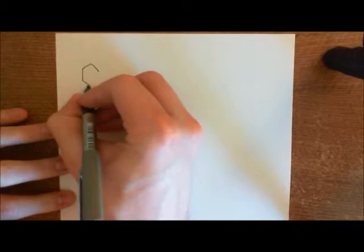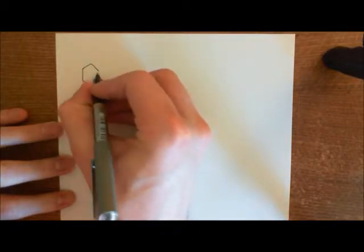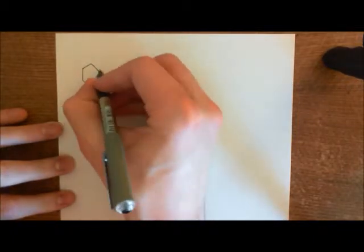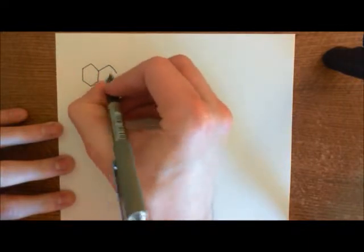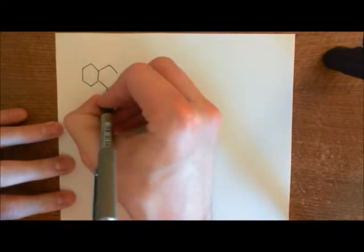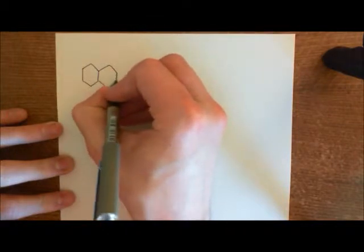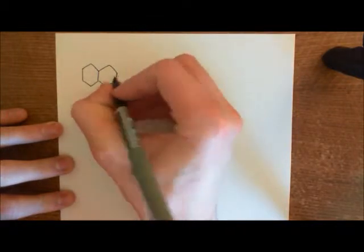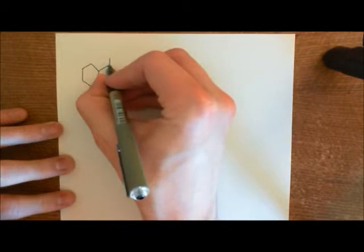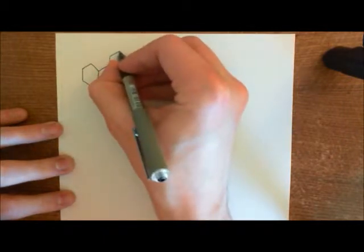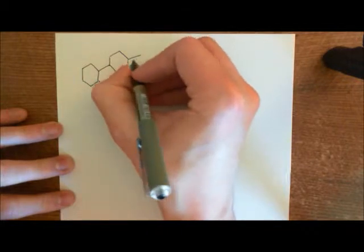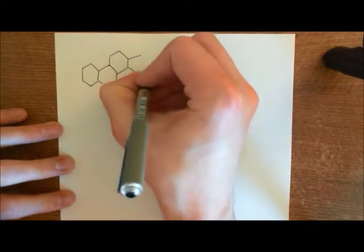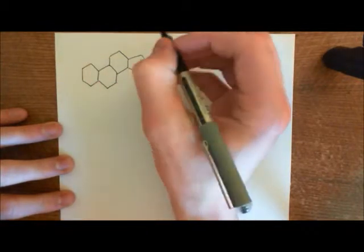Steroids have this characteristic four-ringed structure. They have four of these cyclohexane, well actually, three cyclohexane and then a cyclopentane ring linked on. Here's the third ring of the steroid structure, and then finally, the fourth ring is over here, and the fourth ring is a pentameric ring.